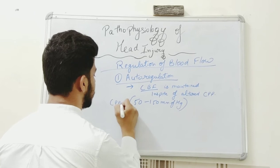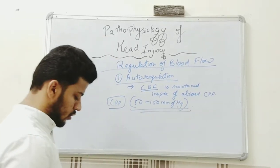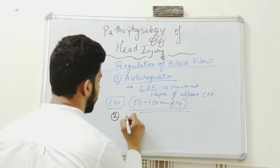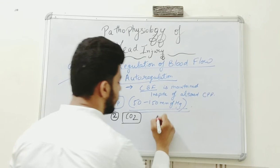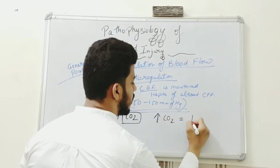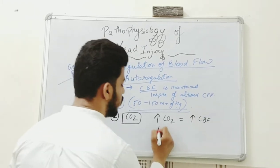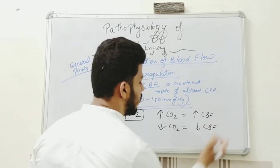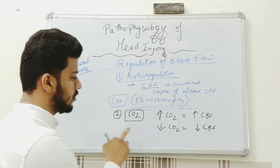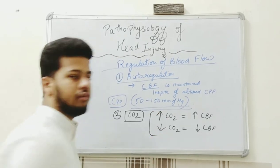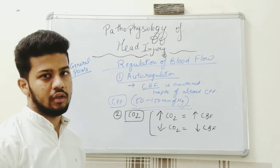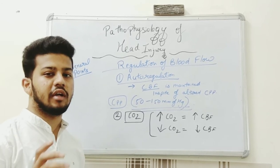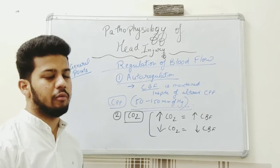The second important factor is CO2. If CO2 is increasing, it causes increased cerebral blood flow. If CO2 is decreasing, it causes decreased cerebral blood flow. We apply this property in cases of head injury by hyperventilating the patient. By hyperventilation, there is decreased cerebral blood flow, which causes decreased intracranial tension — a very important property we utilize in management.